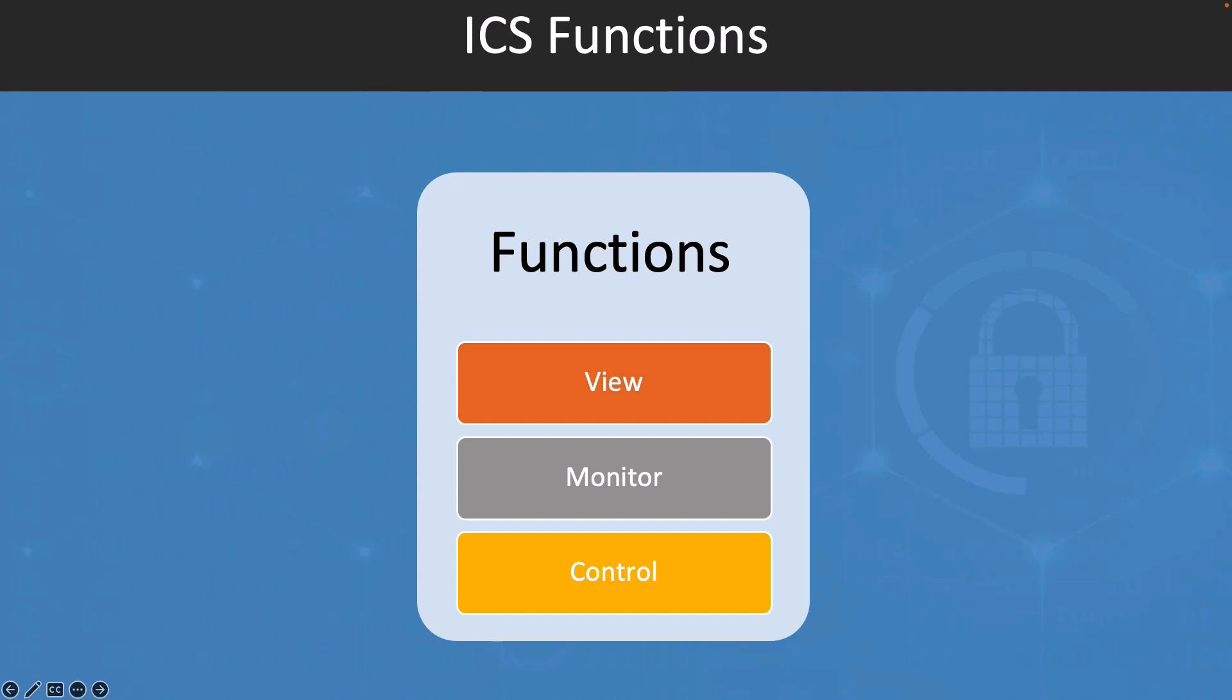The control function involves adjusting the process parameters to maintain optimal and safe operations. It includes the use of controllers to regulate various process parameters such as temperature, pressure, and flow rate. And the use of actuators to adjust valves, pumps, and other equipment to maintain these parameters within the desired range. The control function can be automated or manual depending on the complexity of the process and the level of operator involvement required.